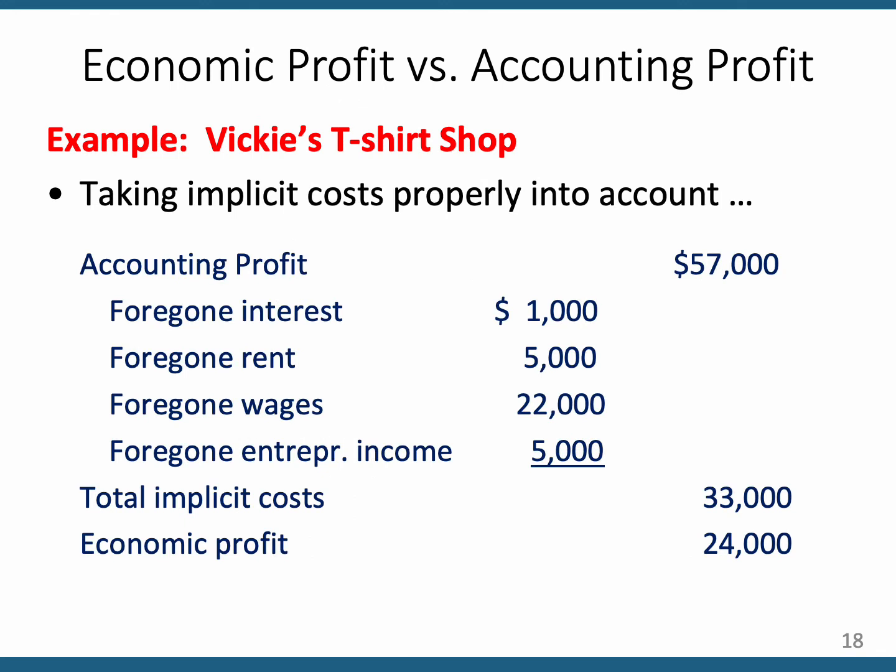Now let's figure out economic profit — it's going to be smaller than accounting profit. Accounting profit was $57,000, but now we subtract each implicit cost: foregone investment income of $1,000, foregone rent of $5,000 because you're using your own space, foregone wages of $22,000 from Acme Dynamite Company, and foregone entrepreneurial income estimated at $5,000. That's an additional $33,000 of implicit costs, so your economic profit is just $24,000.